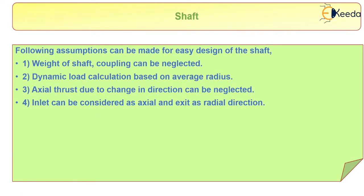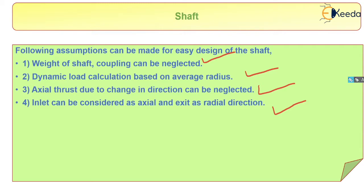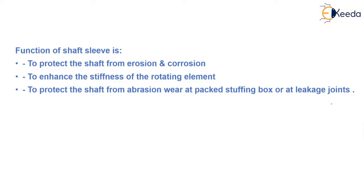The following assumptions can be made for easy shaft design: the weight of the shaft coupling can be neglected; dynamic load calculation is based on the average radius; axial thrust due to change in direction can be neglected; and the inlet can be considered axial while the exit is considered in the radial direction.